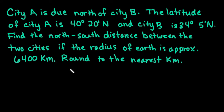So city A is due north of city B. The latitude of city A is 40 degrees, 20 minutes north, and city B is 34 degrees, 5 minutes north. So we're going to find the north-south distance between the two cities if the radius of the earth is approximately 6,400 kilometers, and we're going to round to the nearest kilometer.